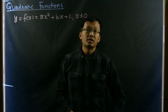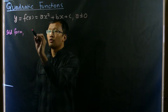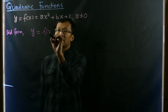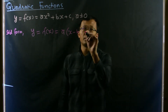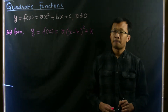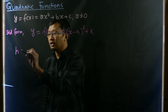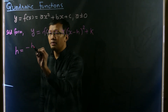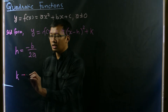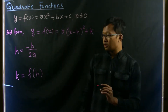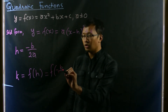This function can be written in a standard form which is y equals f of x equals a times (x minus h) squared plus k, where h is simply negative b over 2a, and k is f of h. So f of h means f of negative b over 2a.